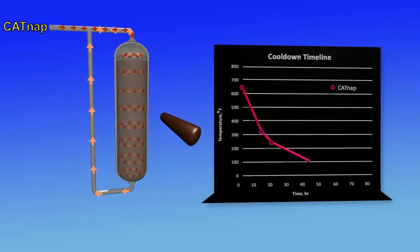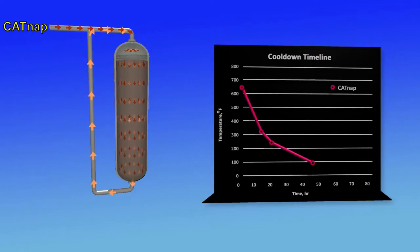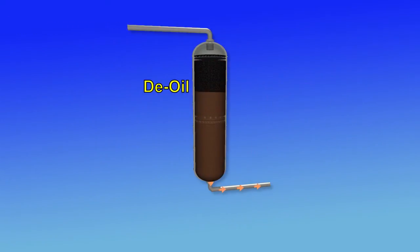This cooling method is faster than circulating hydrogen. When the target temperature has been established, the circulation is stopped and the unit is de-oiled.